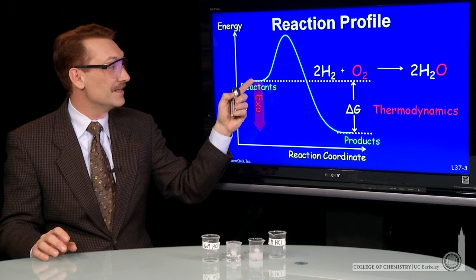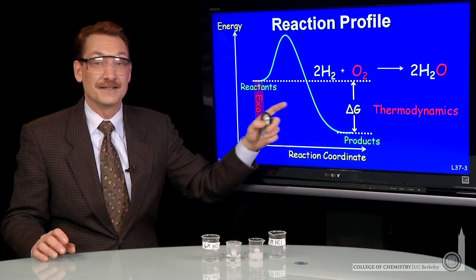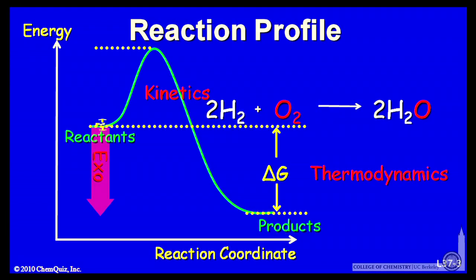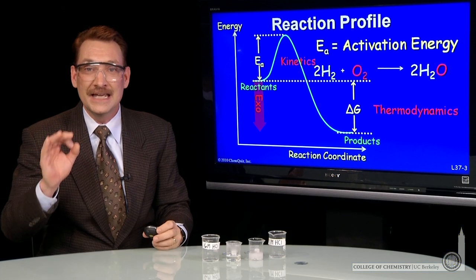That barrier says you need energy to go from reactants to products. This energy is called the activation energy, or EA. And that's the domain of kinetics.